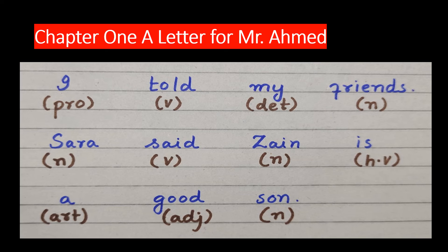Here, there are two proper nouns. One is Sarah and the other is Zain. And that is why they are written with capital letters. And all other nouns are common nouns so they are written with the small letters.